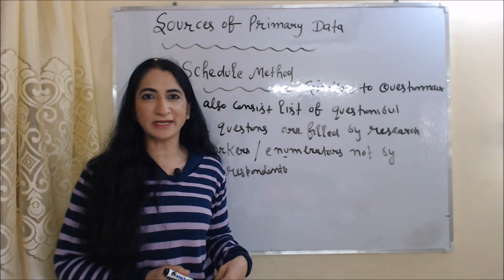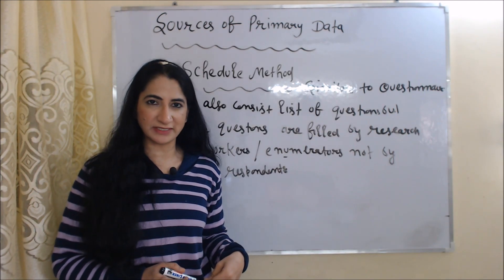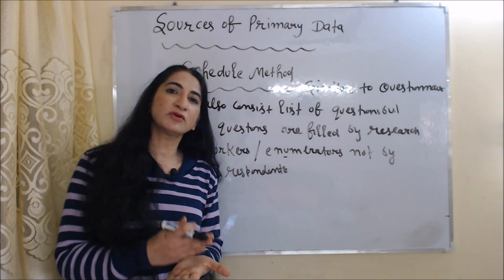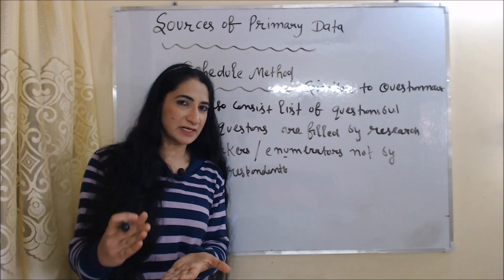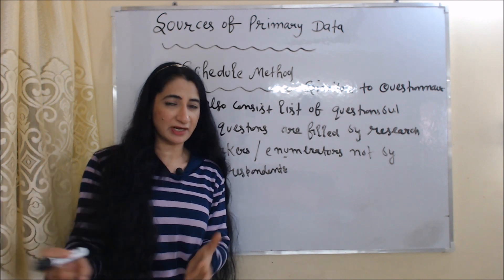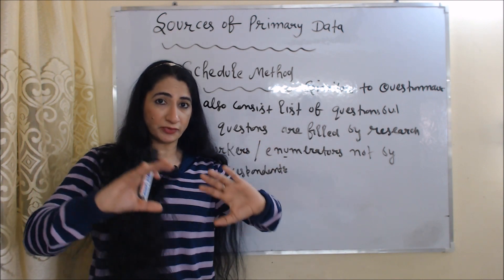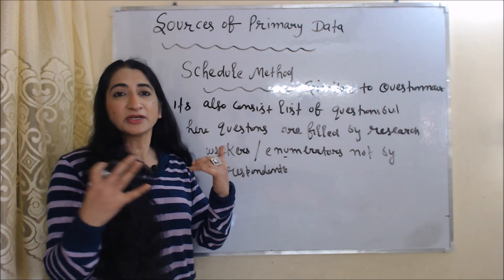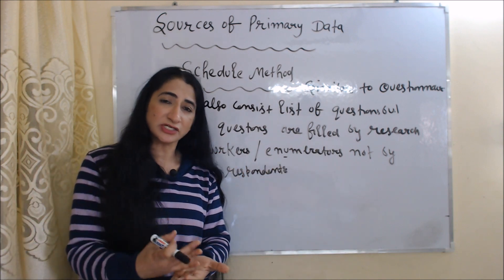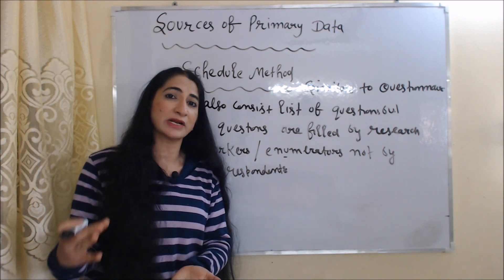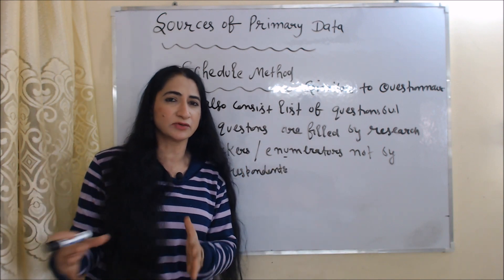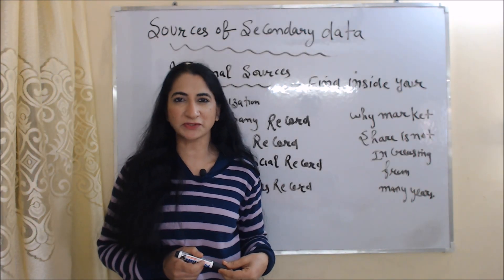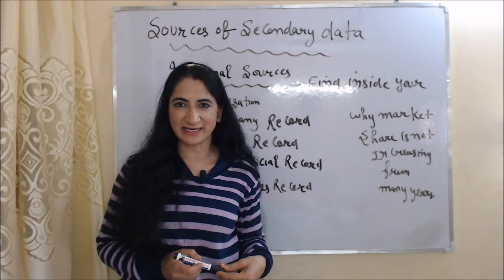The next source of primary data is the schedule method. The schedule method is similar to the questionnaire — it also consists of a list of questions. But in this case, the questions are filled by research workers or enumerators, not by the respondents. Now we are going to talk about the sources of secondary data.